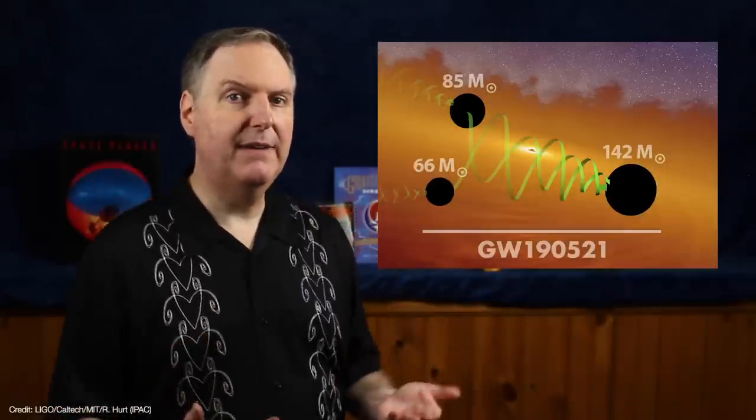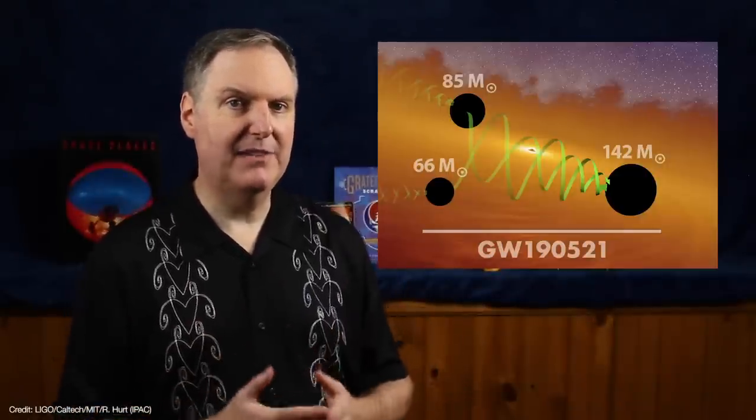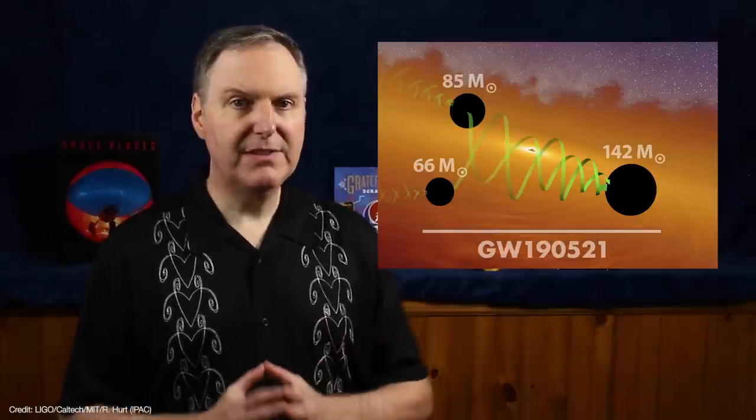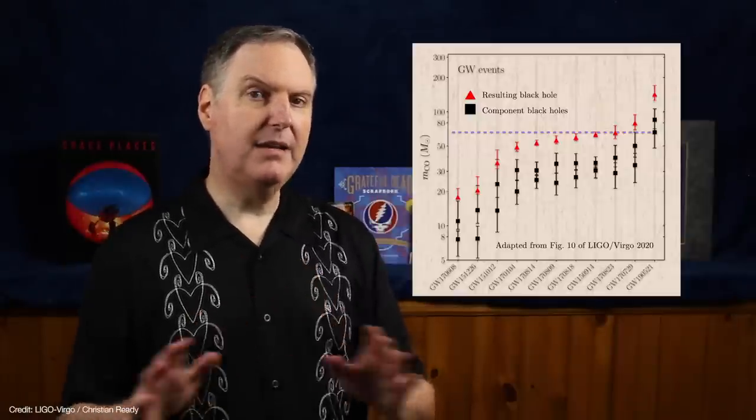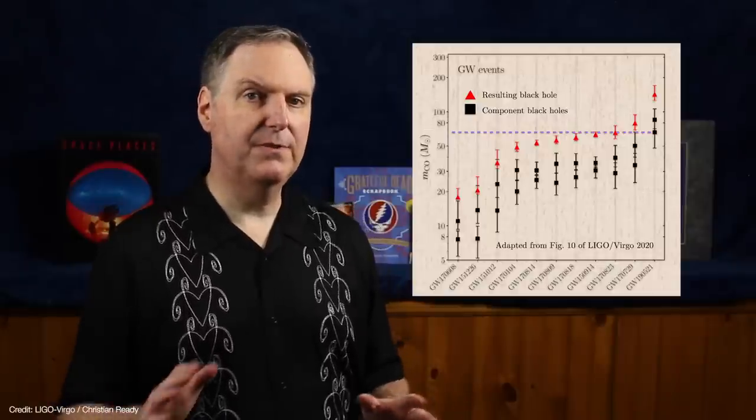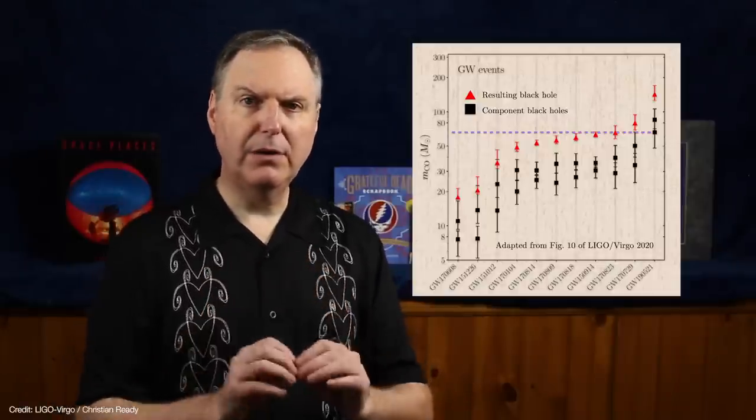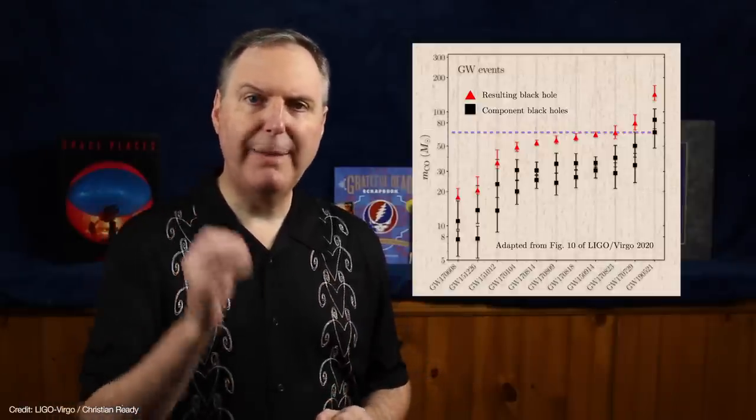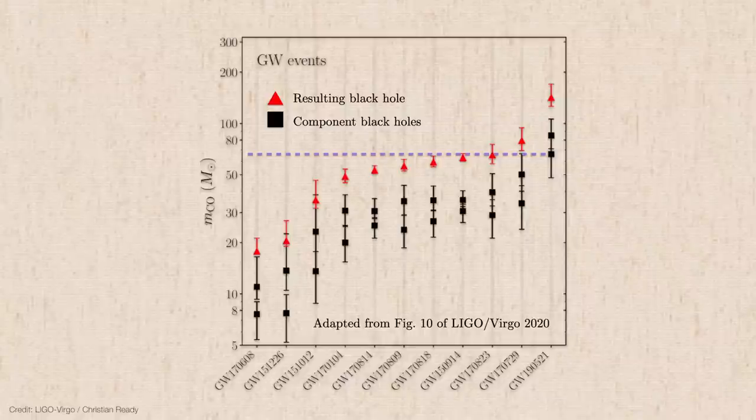But merging black holes don't release energy in the form of electromagnetic radiation. Instead, all of their energy is released as gravitational waves. When the waves were analyzed, the collaboration found that the merging black holes most likely weighed around 85 and 66 times the mass of the Sun. Both of these objects are much more massive than any of the merging black holes detected so far.